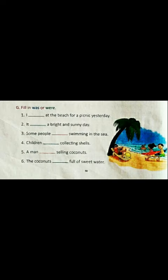Now come to the next use of 'was' or 'were'. Was and were are also helping verbs. They are used in the past form of sentences. See the first sentence: 'I ___ at the beach for a picnic yesterday.' Here we talk about yesterday, so we fill in 'was'. I was at the beach for a picnic yesterday. Children, always remember: 'was' is used with singular nouns and 'were' is used with plural nouns. All these sentences are in the past form.